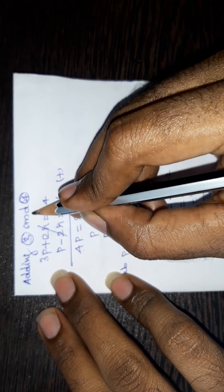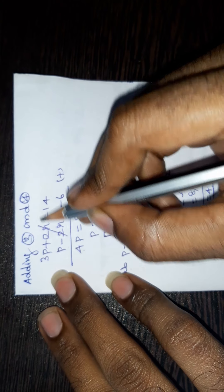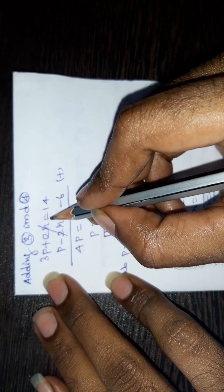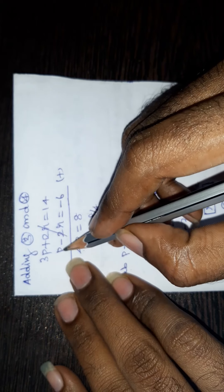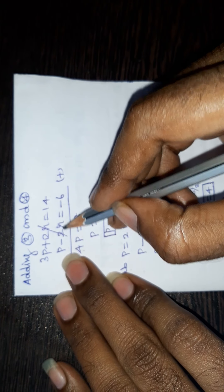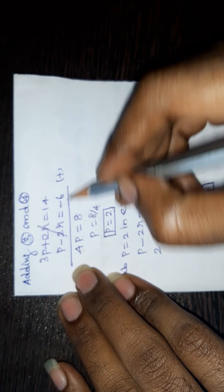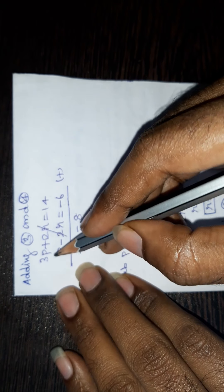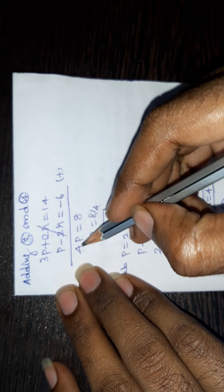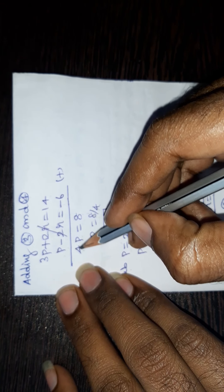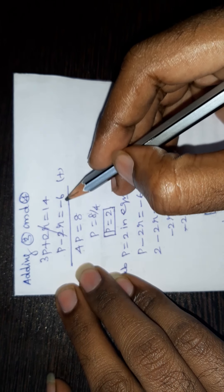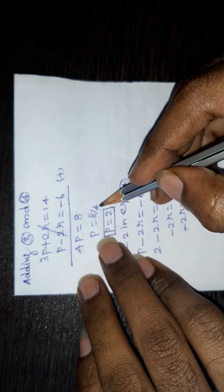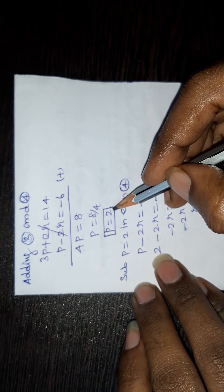Adding equation 3 to equation 4. Equation 3: 3p plus 2r equal to 14. Equation 4: p minus 2r equal to minus 6. Adding these, the 2r terms cancel. So 3p plus p is 4p equal to 14 minus 6 equals 8. Therefore p equal to 8 by 4, which gives p equal to 2.